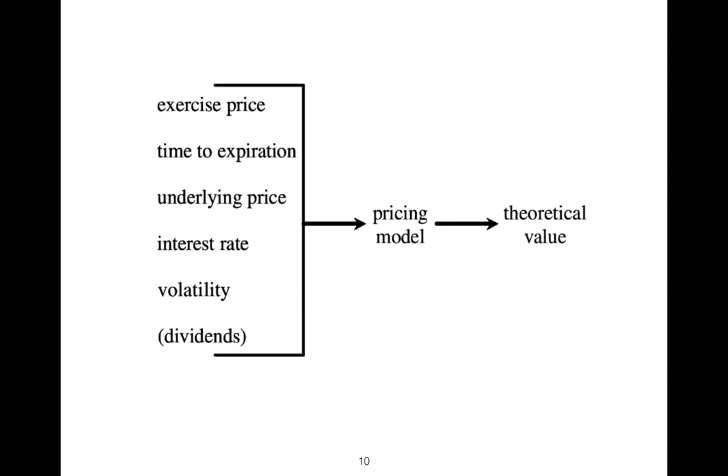The Black-Scholes model depends on exercise price, time to expiration, underlying price, volatility, interest rates. If we just put the data that we are getting from, for example, Interactive Brokers, you can do a backward computation iteratively.